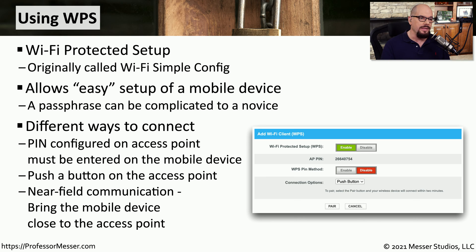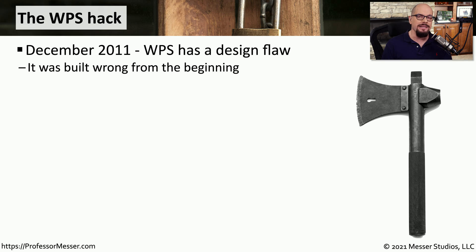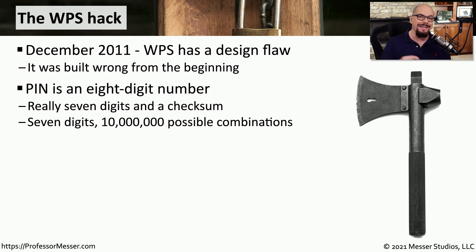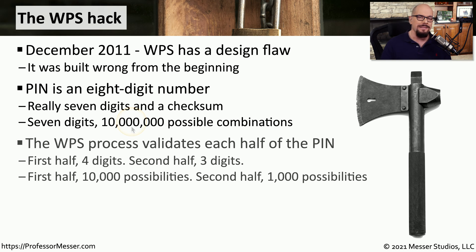Perhaps the most common WPS method is adding a personal identification number to devices connecting to the wireless network. Unfortunately, WPS includes a significant flaw associated with this PIN, and you may find that disabling WPS is a better idea than leaving it enabled. The challenge is that WPS was built incorrectly from the very beginning. The verification of the PIN is an important step during authentication, and that PIN is an eight-digit number. Looking at the details, it's really a seven-digit number — the last digit is a checksum — meaning there are only 10 million possible combinations to brute force.